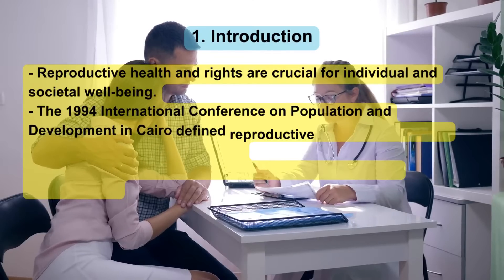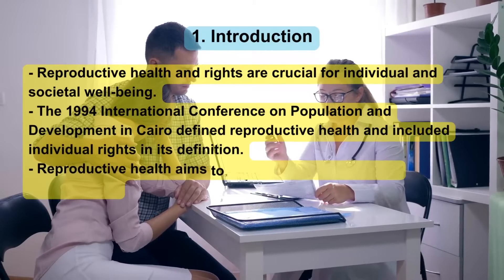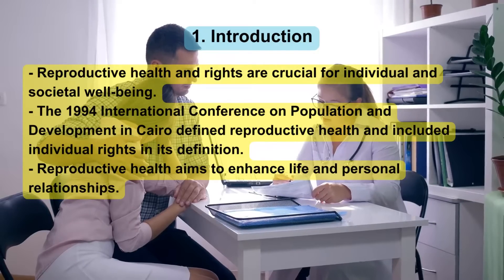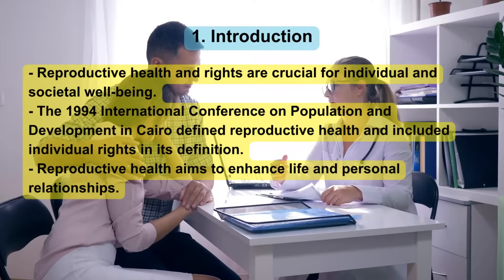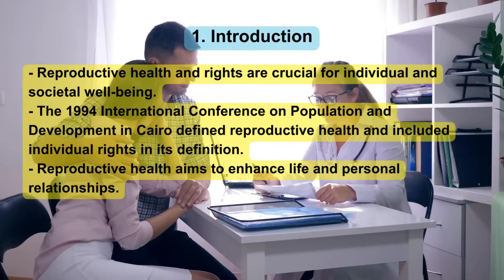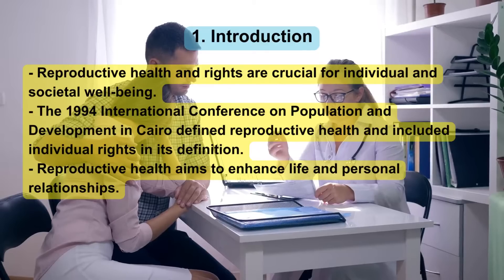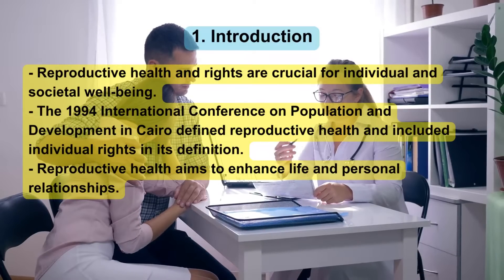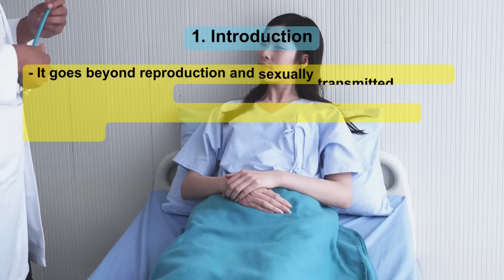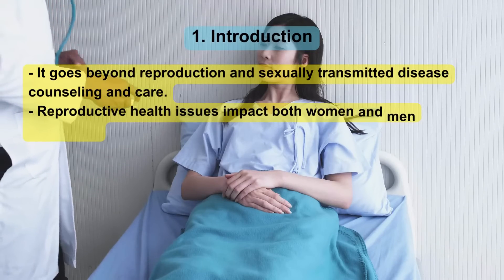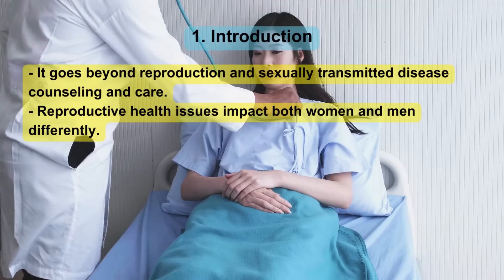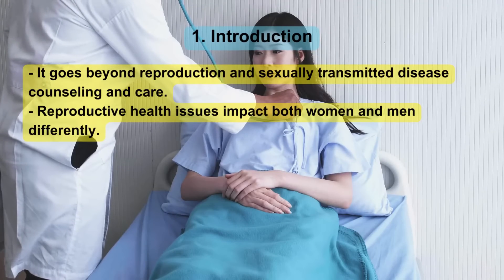Reproductive health and rights are crucial for individual and societal well-being. The 1994 International Conference on Population and Development in Cairo defined reproductive health and included individual rights in its definition. Reproductive health aims to enhance life in personal relationships, going beyond reproduction and sexually transmitted disease counseling and care. Reproductive health issues impact both women and men differently.